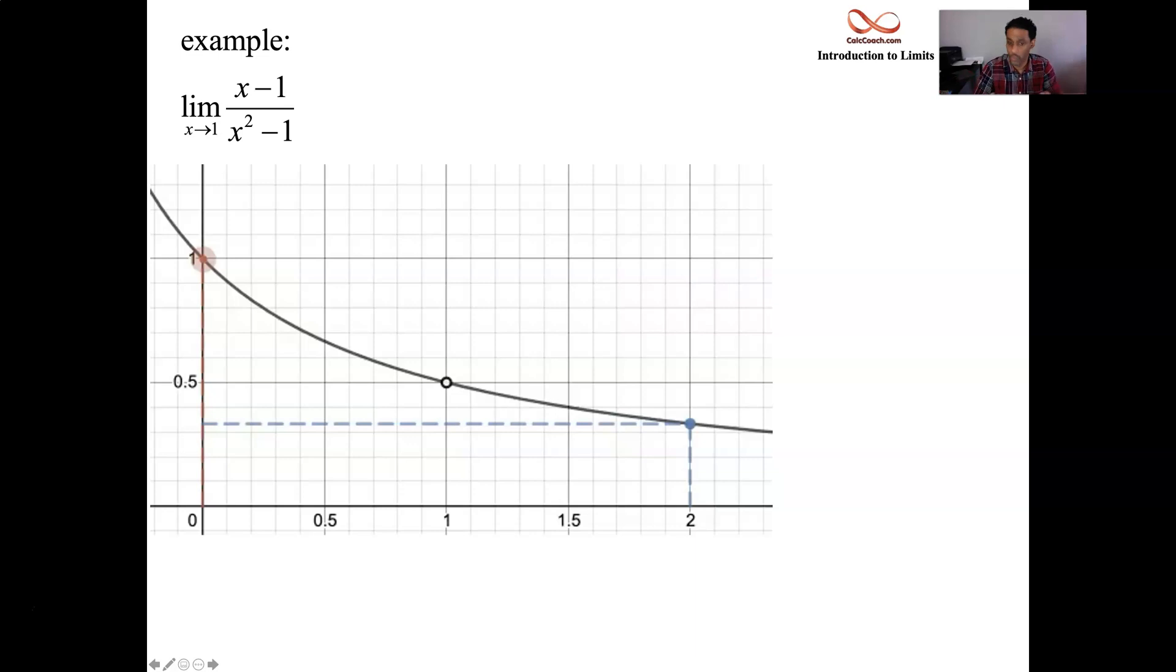But, as you approach 1, the y values are approaching a half. The red is approaching from the left. The blue is approaching from the right. You're approaching 1. That's what's going on. When x is approaching 1, and the points, the y values, they are approaching a half. There's a hole in the graph. It doesn't matter that there's a hole in the graph. You're headed towards a half from the left, and you're headed towards a half from the right. The y values are headed towards a half as x approaches 1.